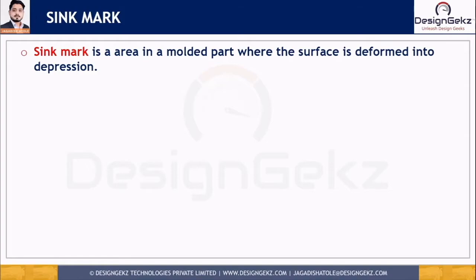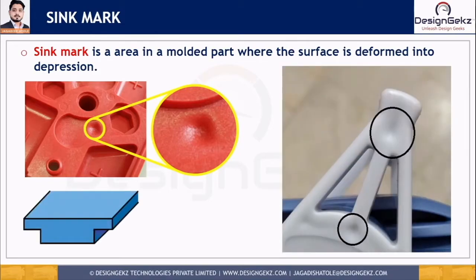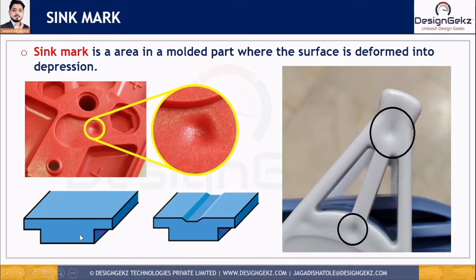Basically, the sink mark is an area in a molded part which is deformed into the surface — a depression. In this image you can see the depressed area. Such depressions occur in the part if the part has uneven or non-uniform thickness, where the thickness is less in one area and more in another area.